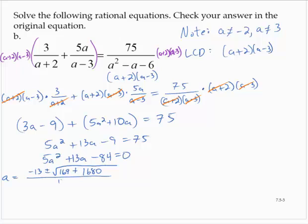And 2 times 5 is 10. Now 169 plus 1,680 is 1,849. So that's negative 13 plus or minus the square root of 1,849 over 10. And the square root of 1,849 is 43.